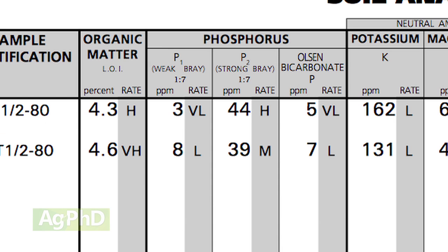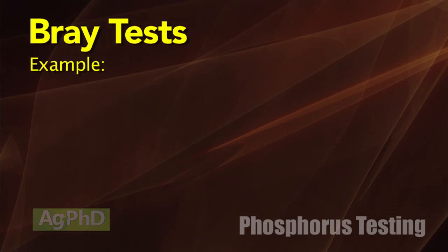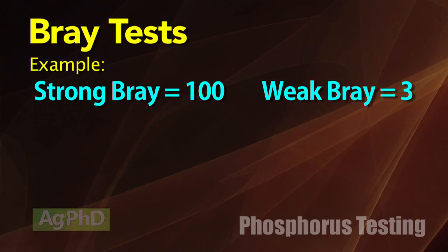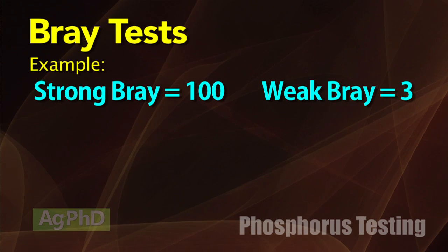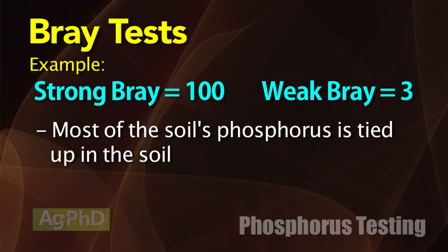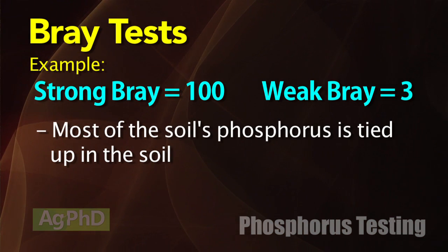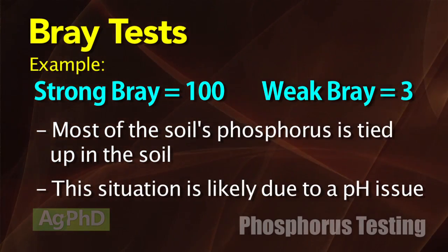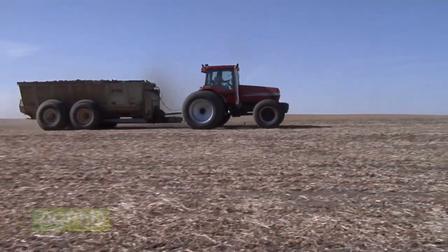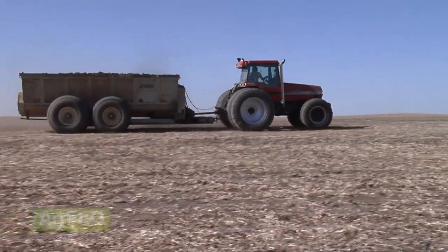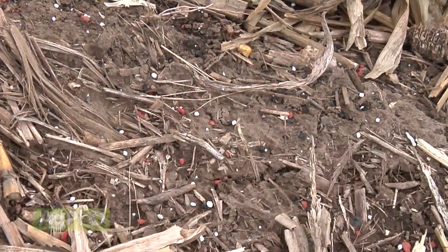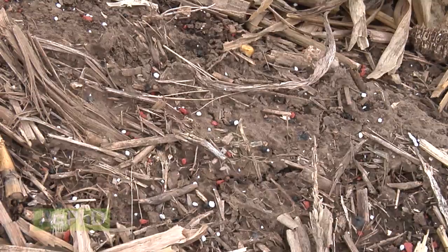What we're really looking for with that weak Bray versus strong Bray is if there's a big gap. If the P2 or strong Bray is showing 100 parts per million and the weak Bray is showing 3 parts per million, that tells you that almost all your soil phosphorus is tied up — we've got a serious problem. Chances are it's a pH issue, but you just have to know that maybe you need to do something else to your soil rather than just throw a whole bunch more phosphorus out there. You're just going to end up with more phosphorus tie-up until you get to the source of that issue.